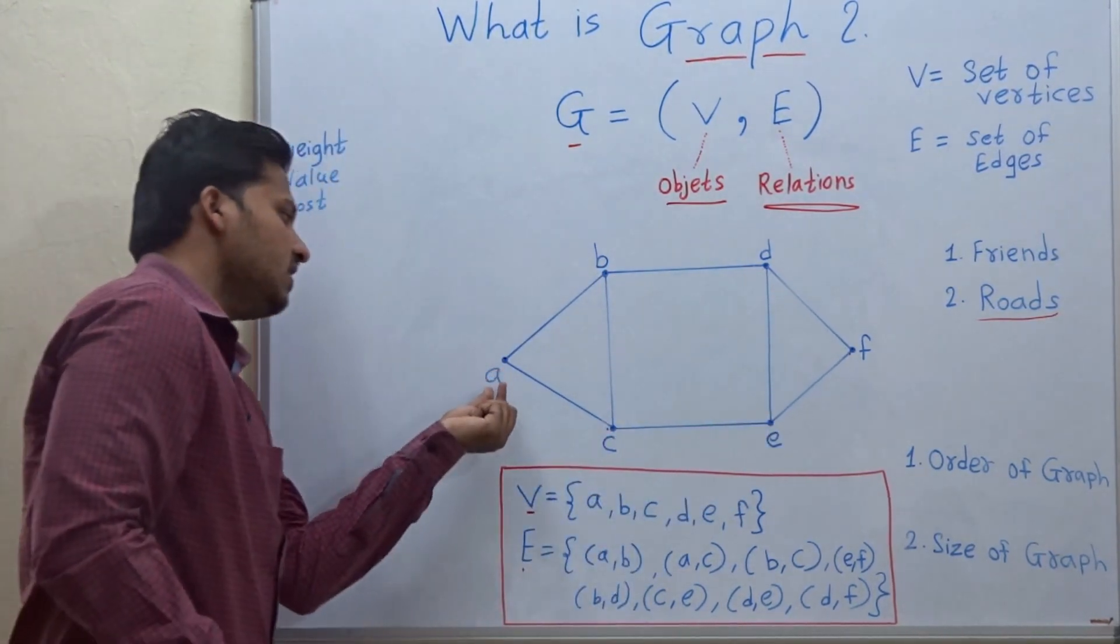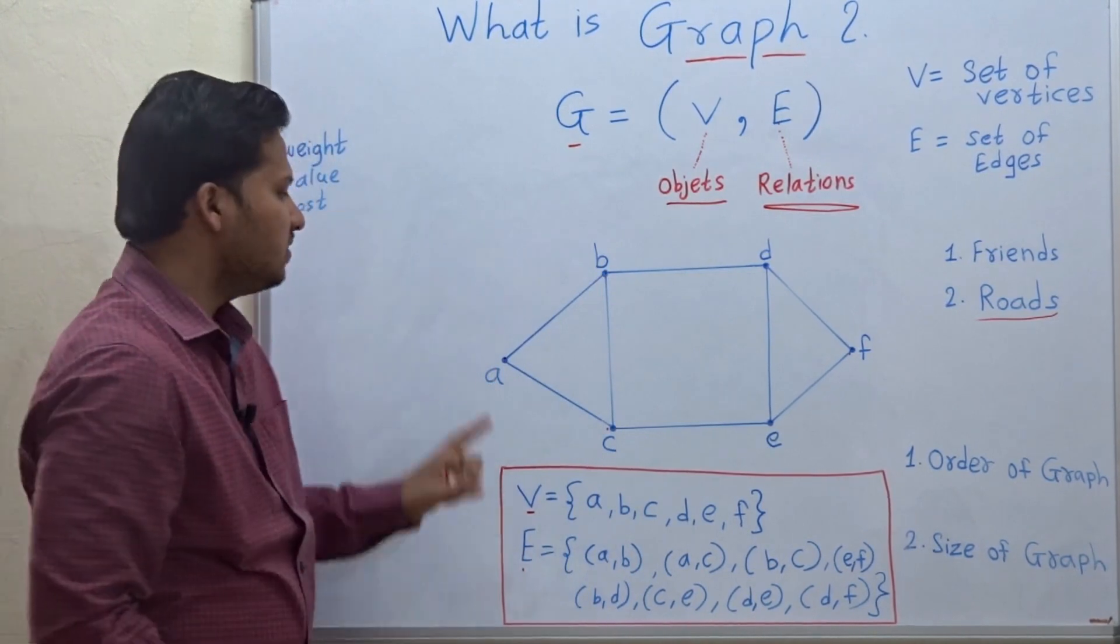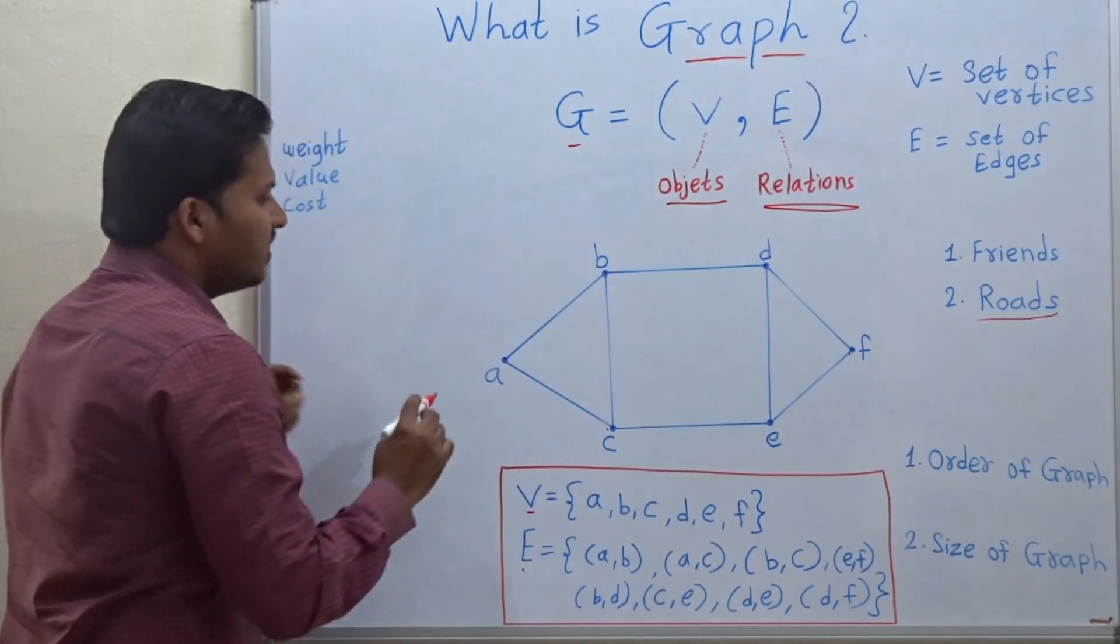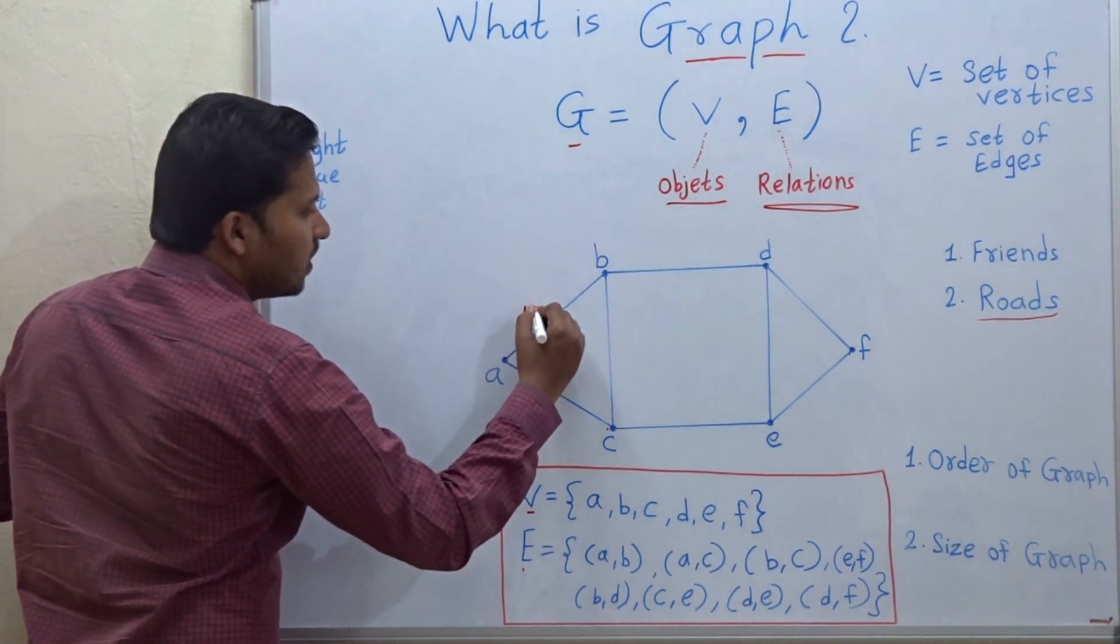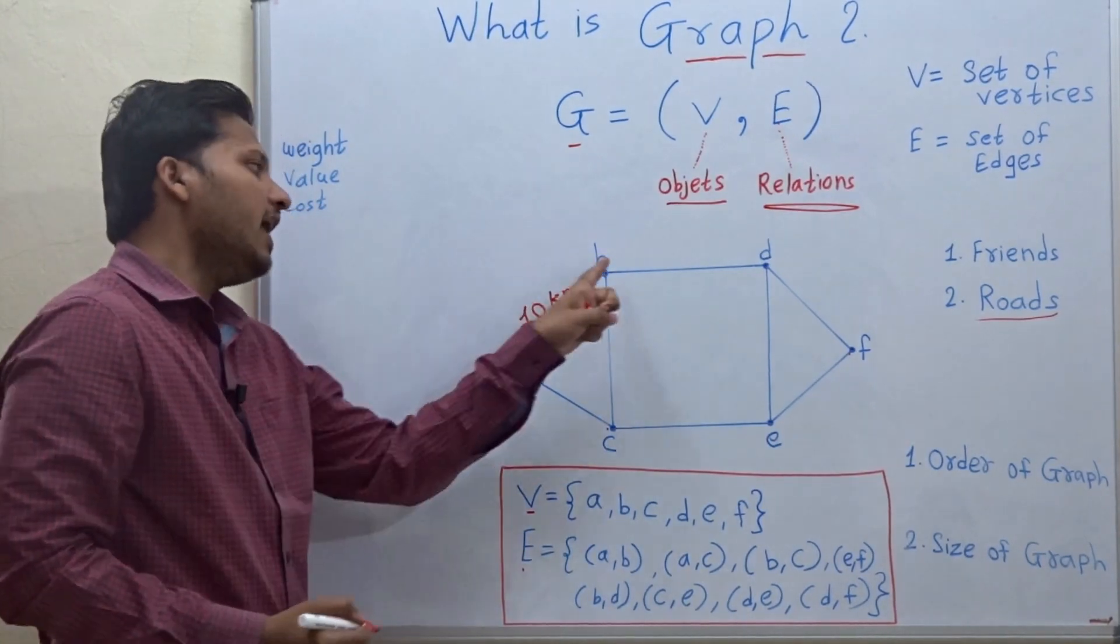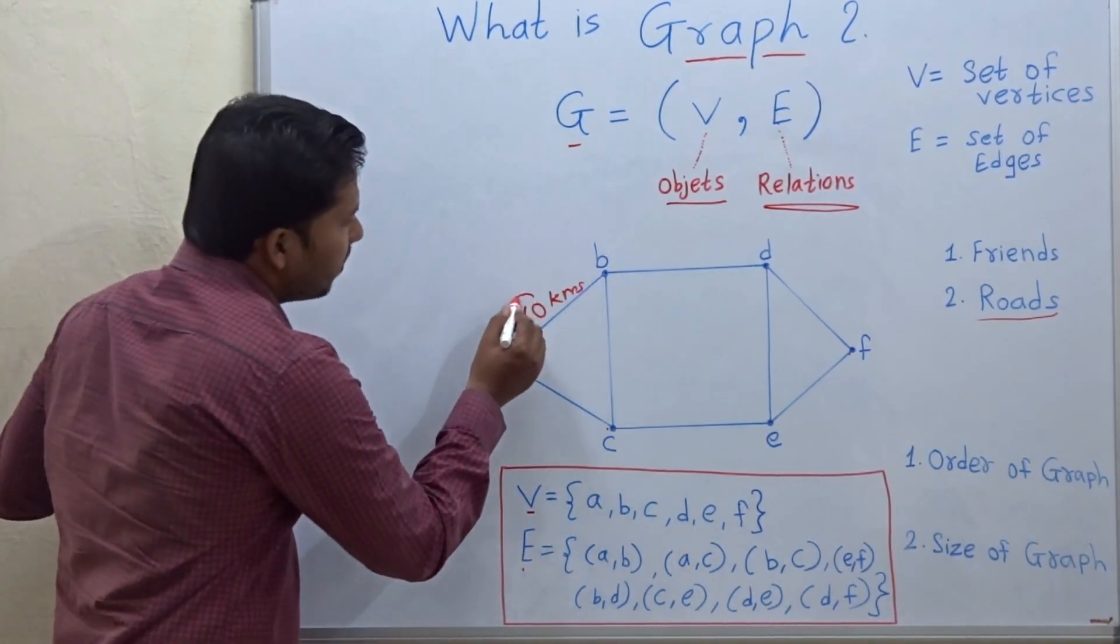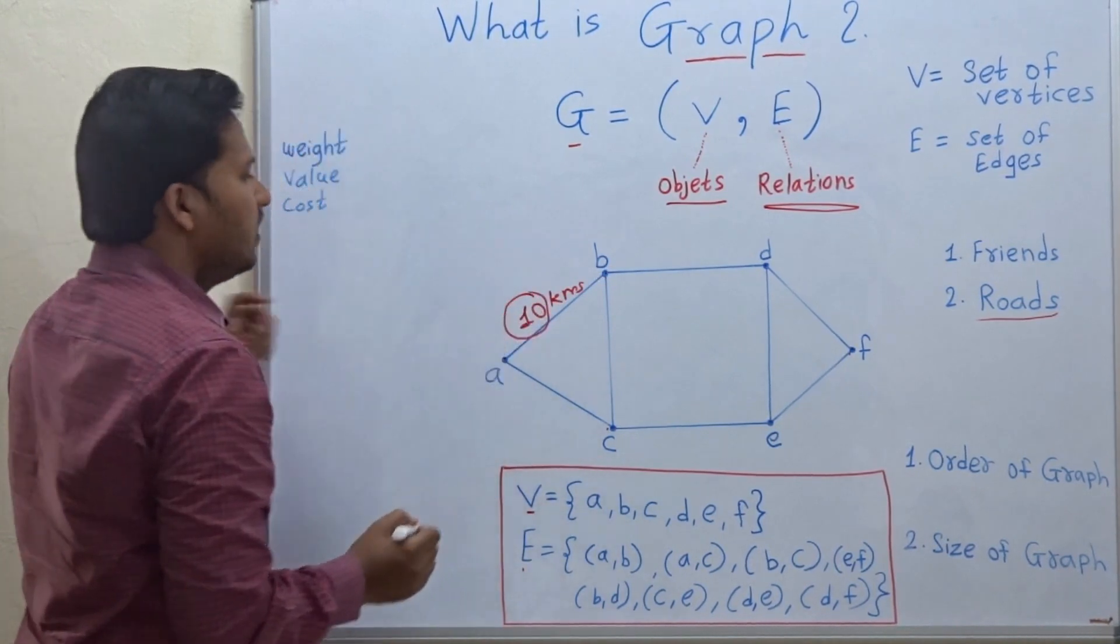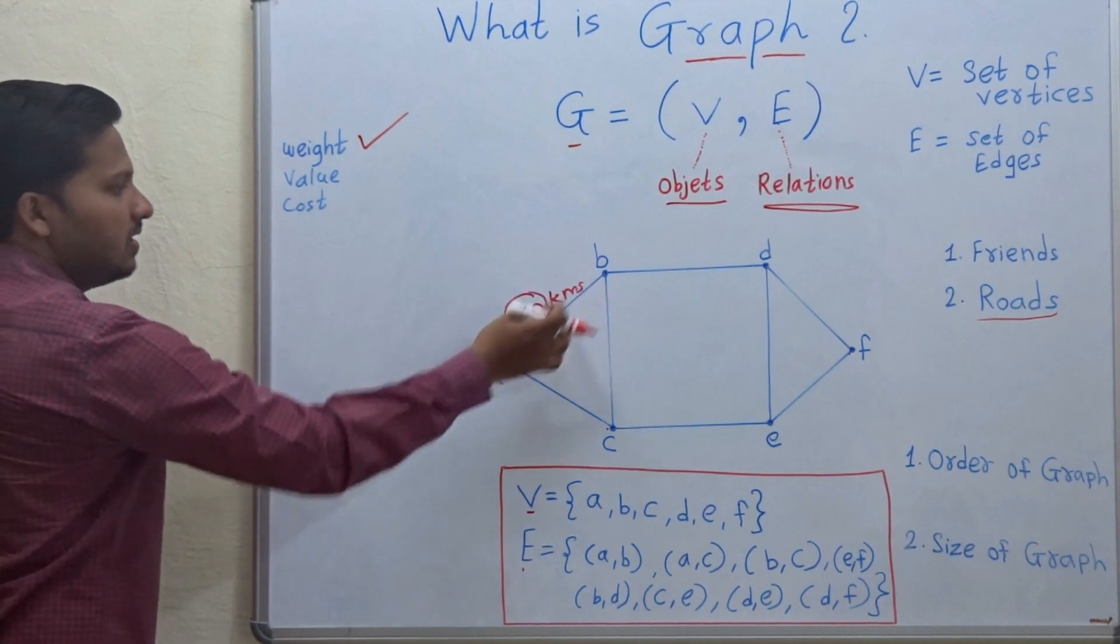So as you can see a and b are cities. We have assumed that these are the cities. Then the edge a, b may have value suppose 10 kilometers, means the distance between a and b city is 10 kilometer. So the value for this edge is 10.